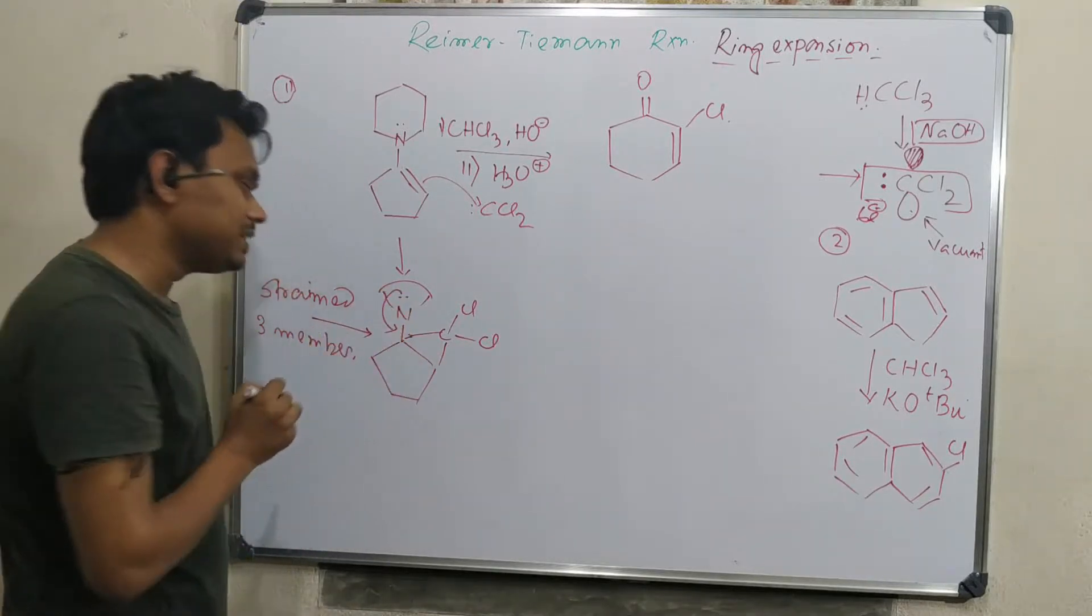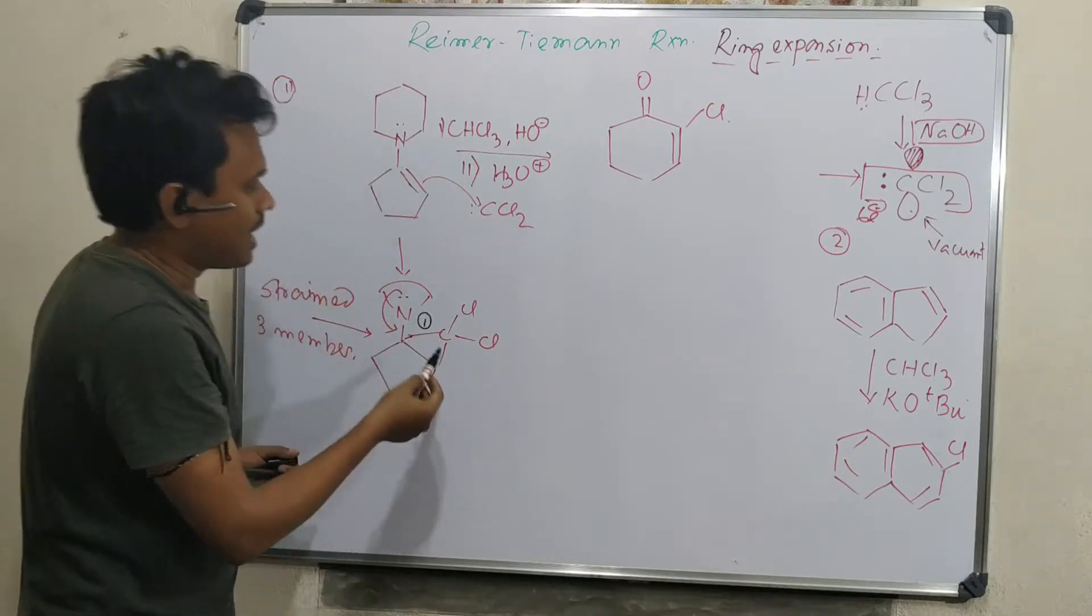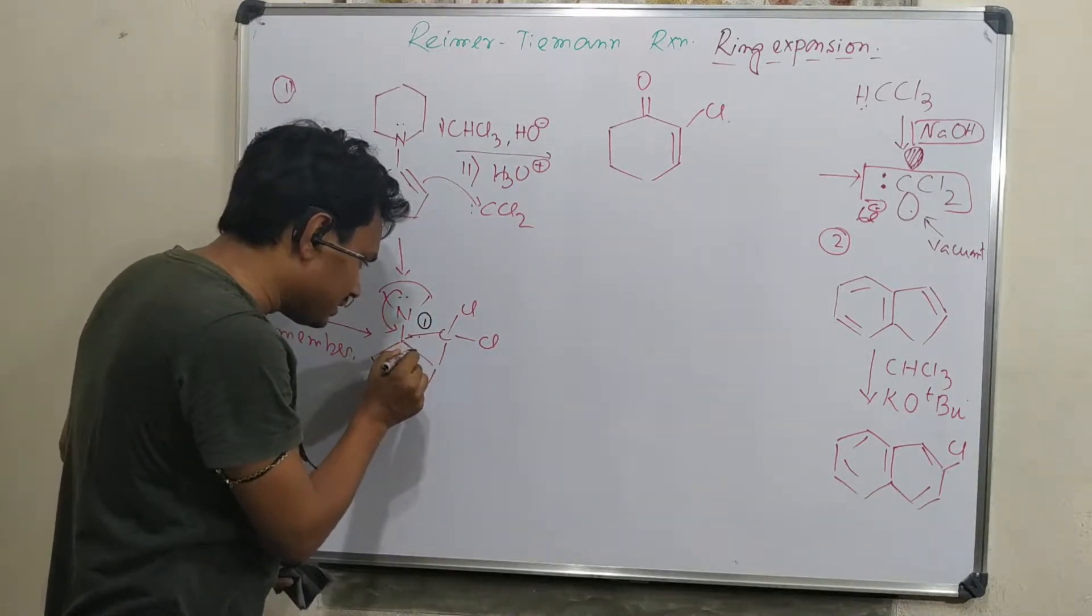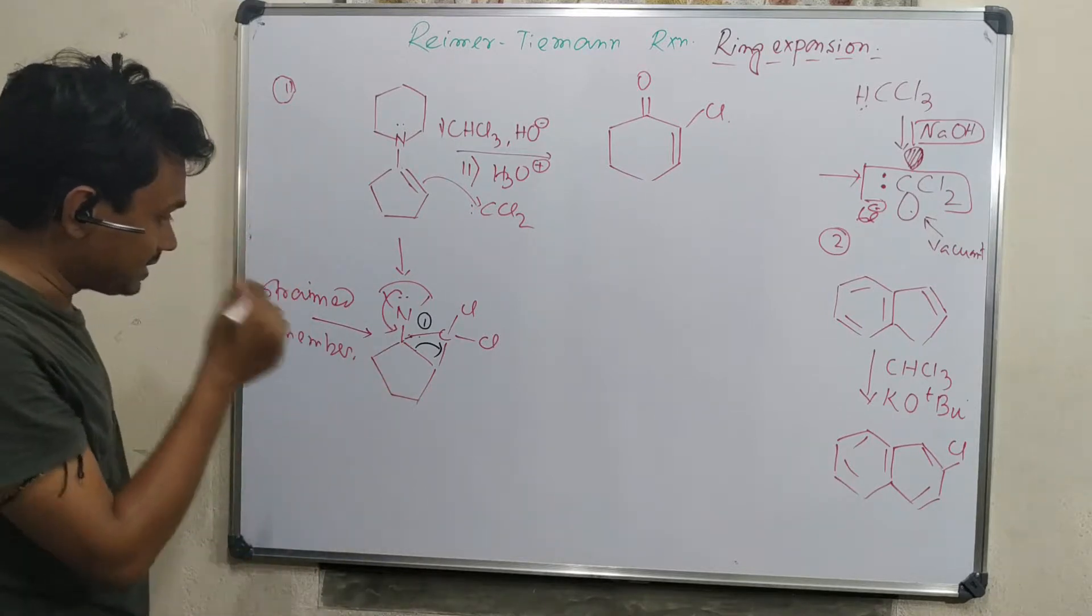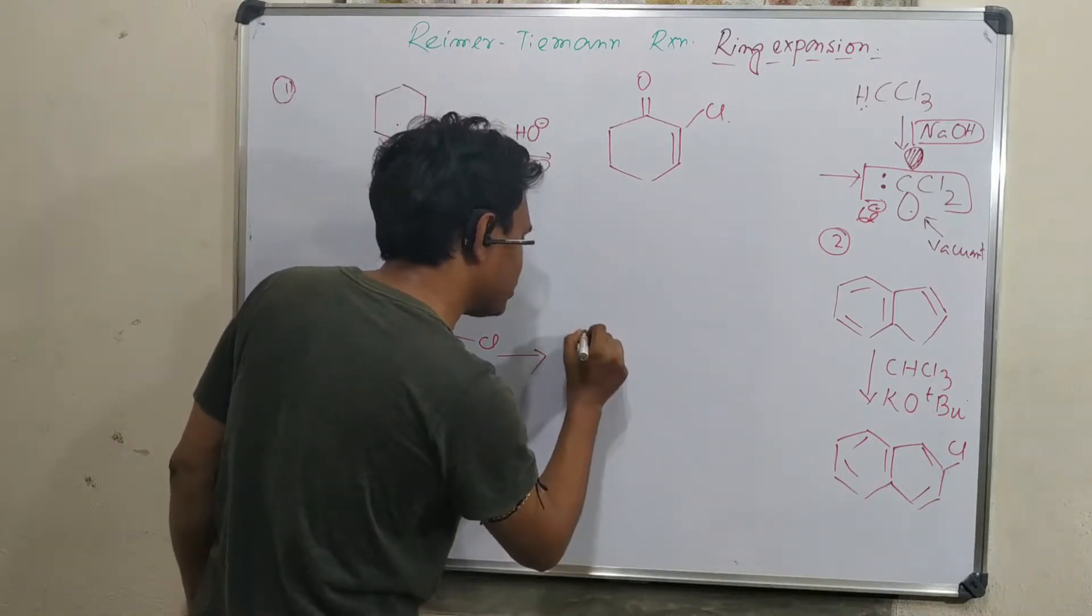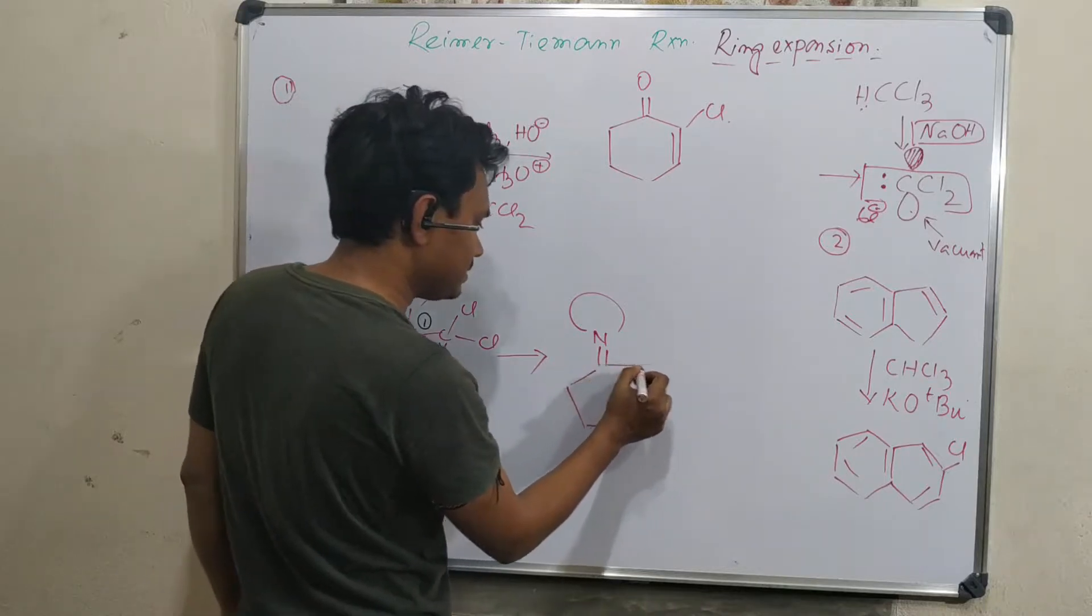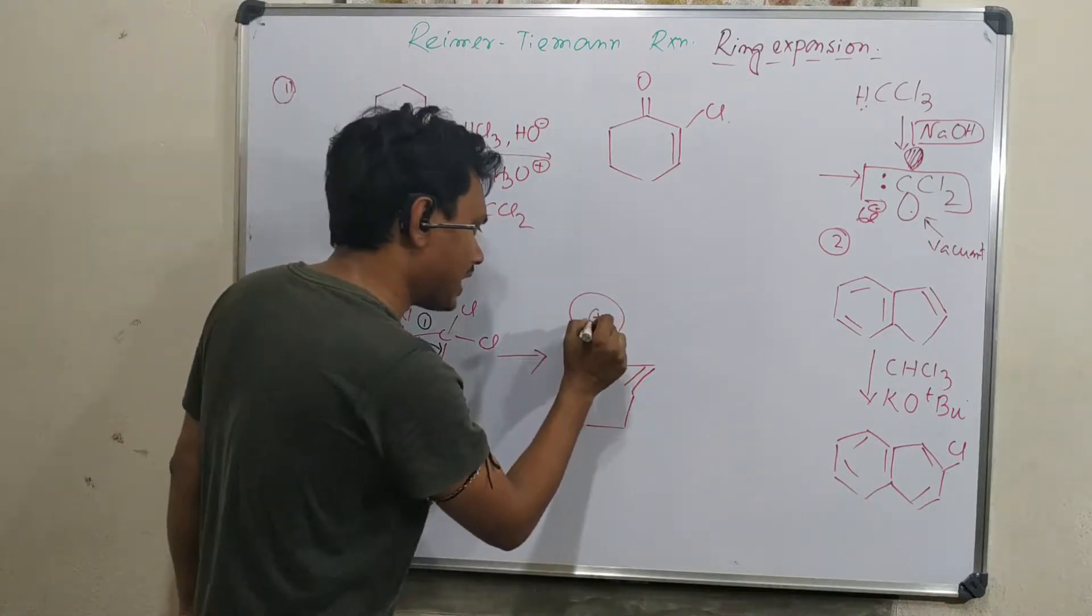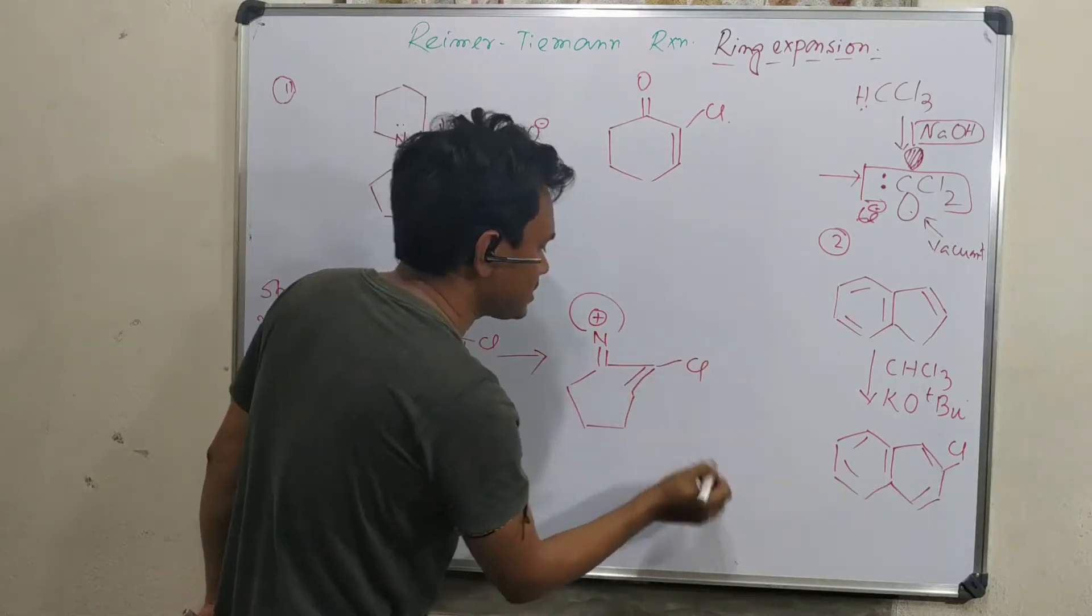This double bond will come here. This bond can break. If it breaks, there will be a five-member ring. Another chance is that this bond can break. If it breaks, then only the ring expansion occurs. If this breaks, it produces ring expansion. Here also, please try to keep everything as it is. Draw the five-member ring. What happened? Double bond came here, nitrogen became charged, and chlorine left.